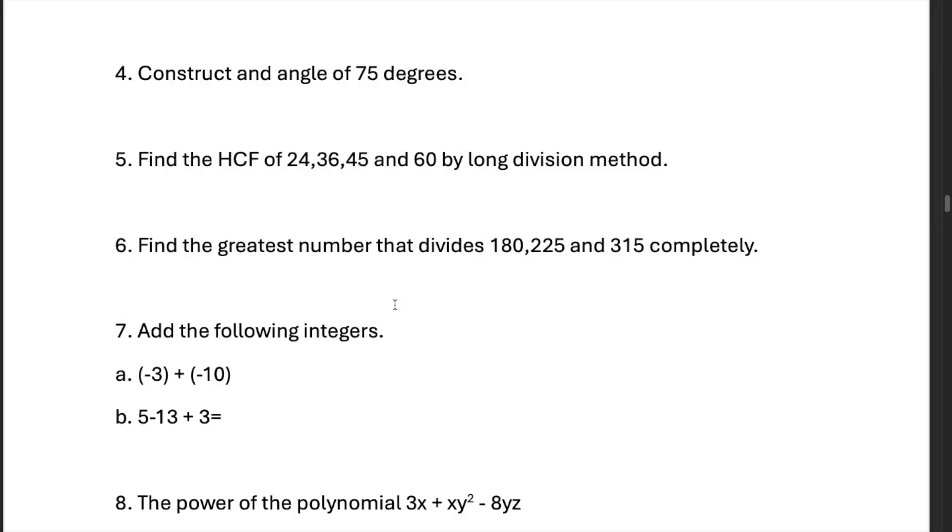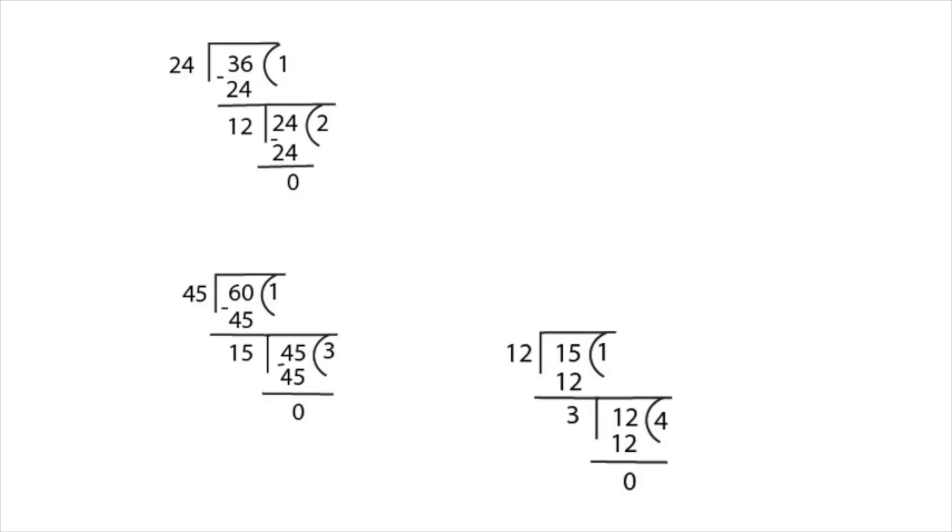Find the HCF of 4 numbers by long division method. First, take the two smallest numbers, 24 and 36. 36 divided by 24, you get the HCF of that is 12. Then you take the next two numbers and find their HCF, which is 15. Then you divide 15 by 12, and you discover that the HCF of all these numbers is 3.